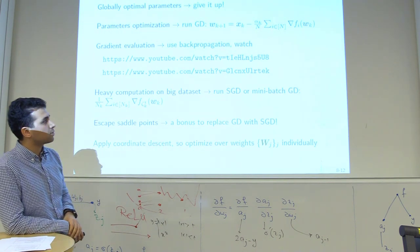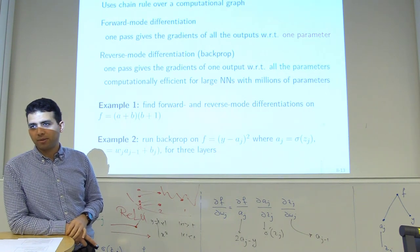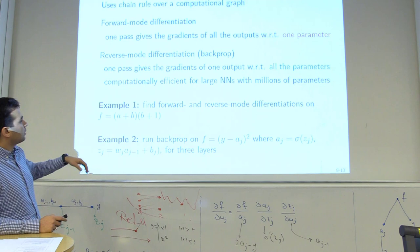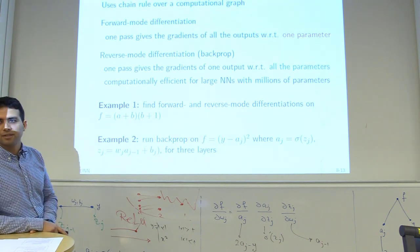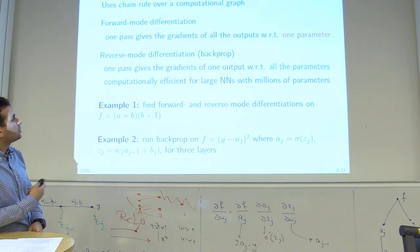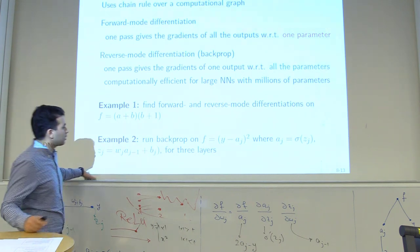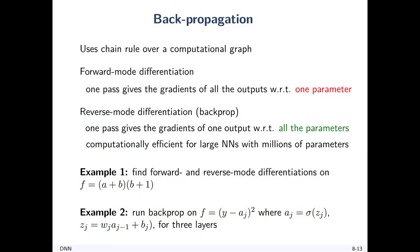Backpropagation is a simple algorithm using the chain rule over a computational graph. It has been independently invented many times across different fields. It's also called reverse mode differentiation, as opposed to forward mode differentiation. Let's build a computational graph for the example f = (a + b)(b + 1), and compare forward and reverse mode differentiation with respect to a and b.